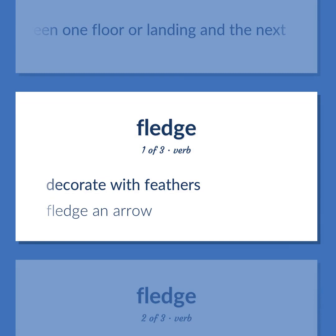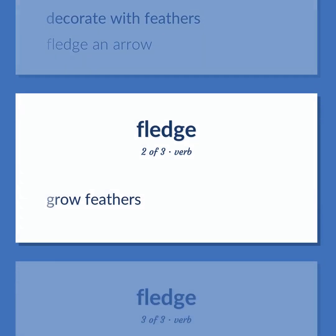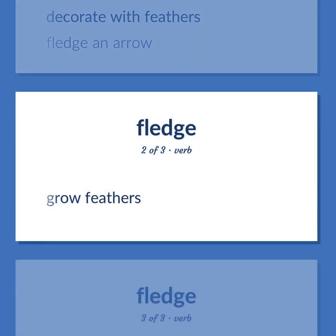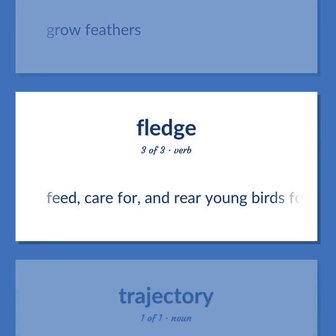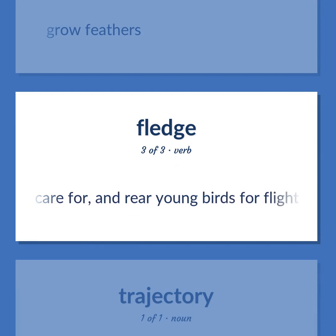Fledge: Decorate with feathers — fledge an arrow. Grow feathers. Feed, care for, and rear young birds for flight.